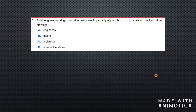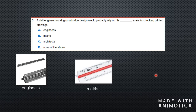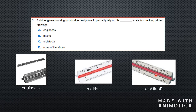Question five: a civil engineer working on a bridge design would probably rely on which scale? A scale is a ruler for checking printed drawings. A civil engineer is someone who works on bridges, roads, and large projects. Here you have an engineer's scale, a metric scale, and an architect scale. The engineer's scale would have a larger square footage or mileage compared to the metric and architect scales, so the civil engineer would probably use the engineer scale because it has a larger ratio.